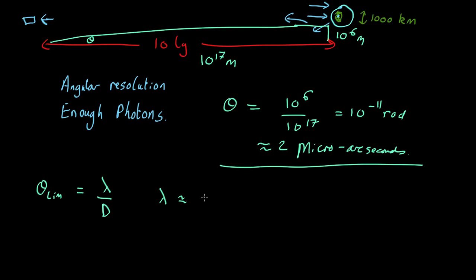So let's assume we're working at about half a micron, which is sort of greenish light, so 10^-6 meters. So then the diameter of the telescope has to be equal to lambda—so 5 × 10^-7—divided by the limiting angle 10^-11, which comes out as about 50 kilometers.